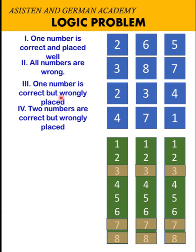Based on statement number 3, one number is correct but wrongly placed. So 2 could be correct, but if 2 is correct, it should not be in the first column. So we can eliminate 2 in the first column. 3 is already eliminated here. And then 4 should not be in the last column based on statement number 3. So let's eliminate 4.